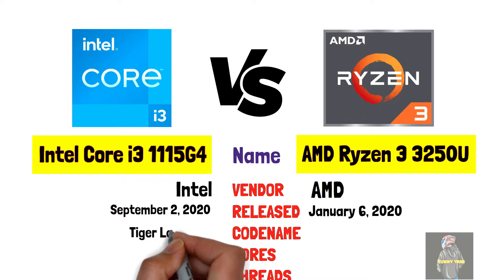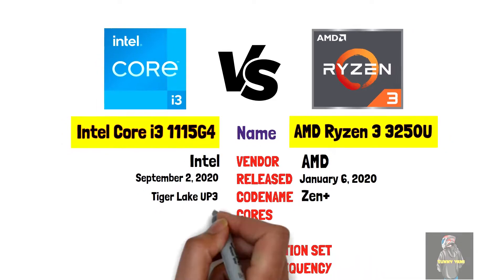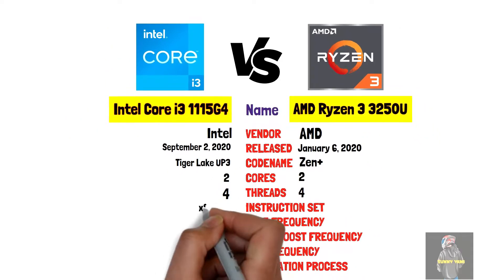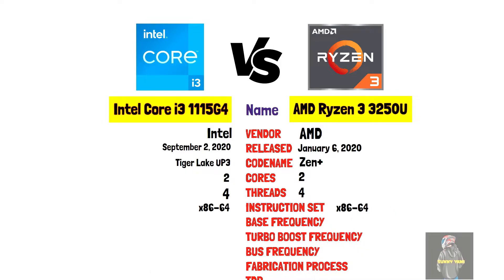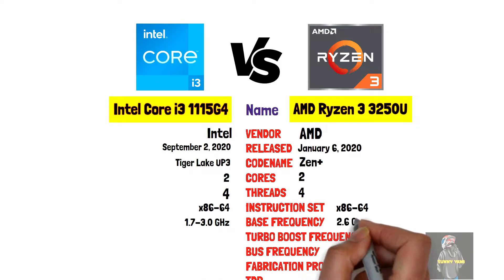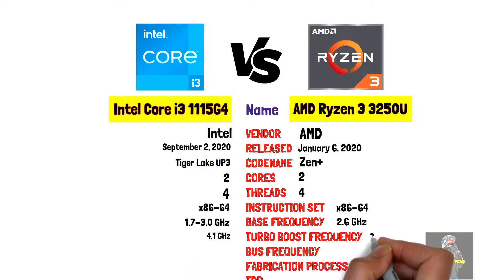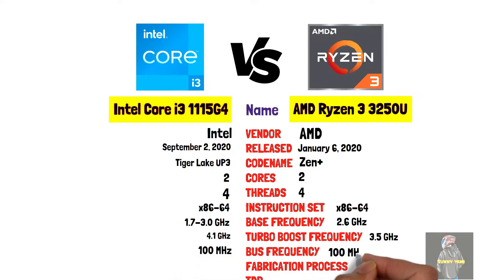Codename: Tiger Lake UP3 versus Zen Plus. Cores: 2 versus 2. Threads: 4 versus 4. Instruction set: x86-64 for both.